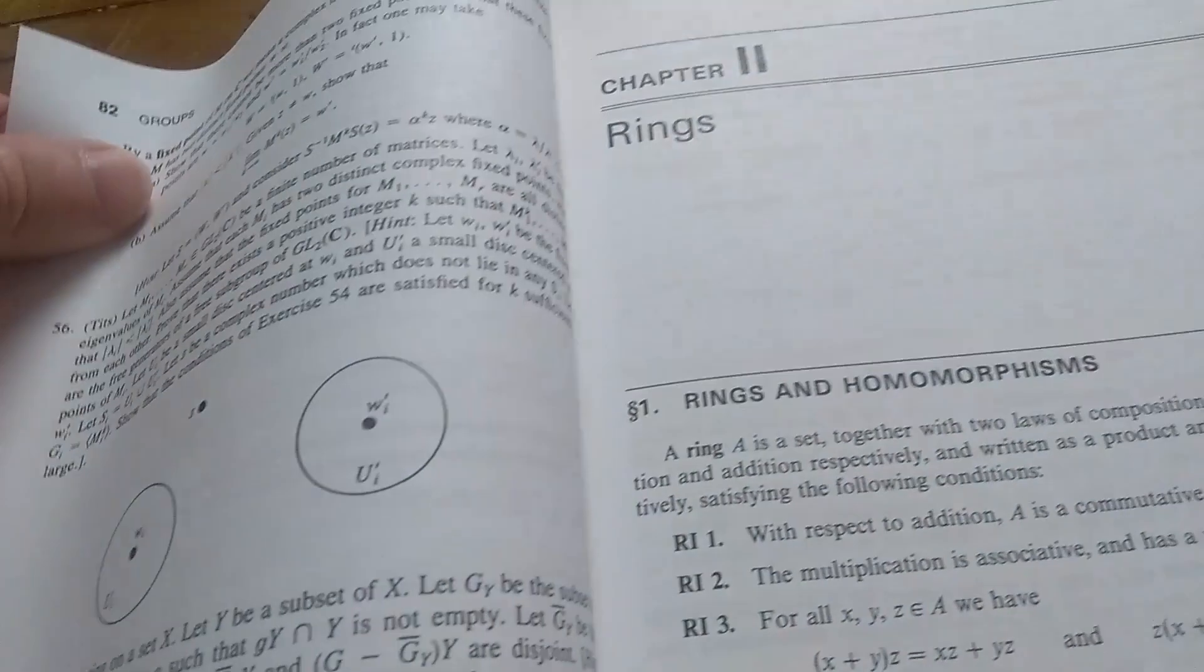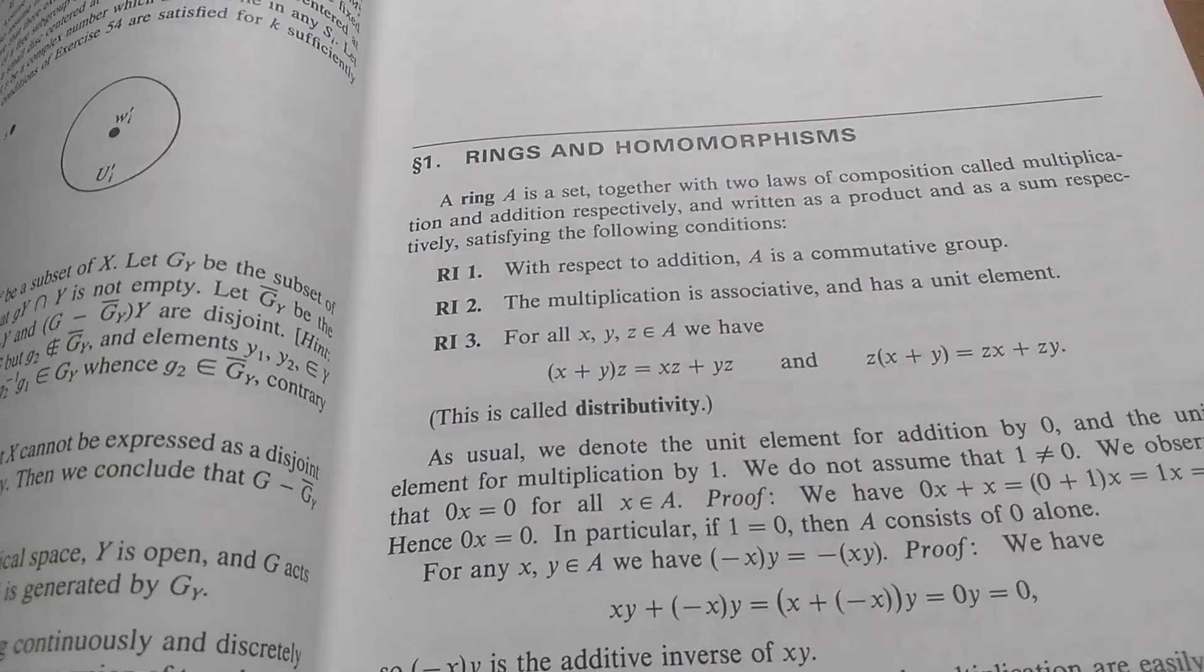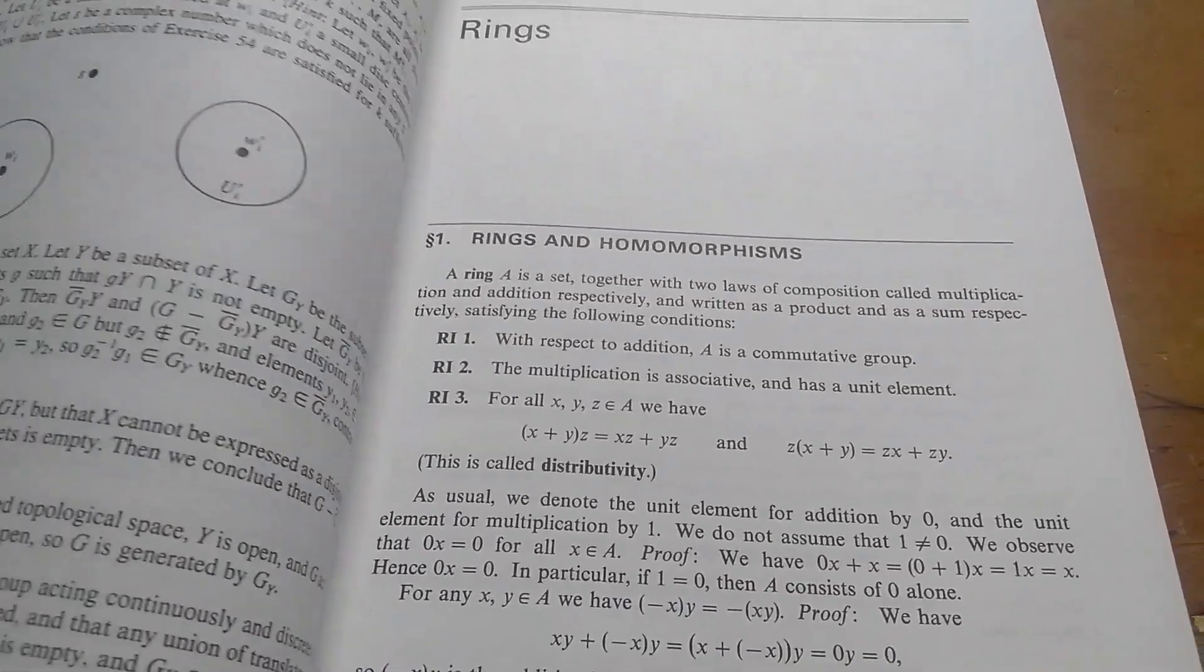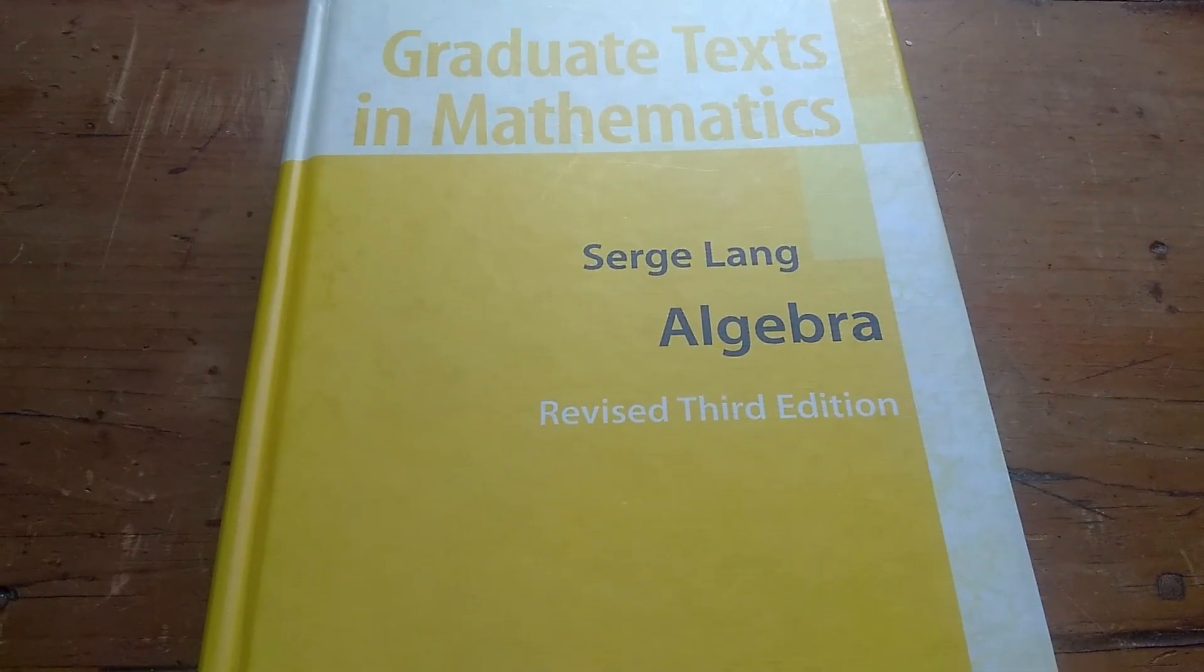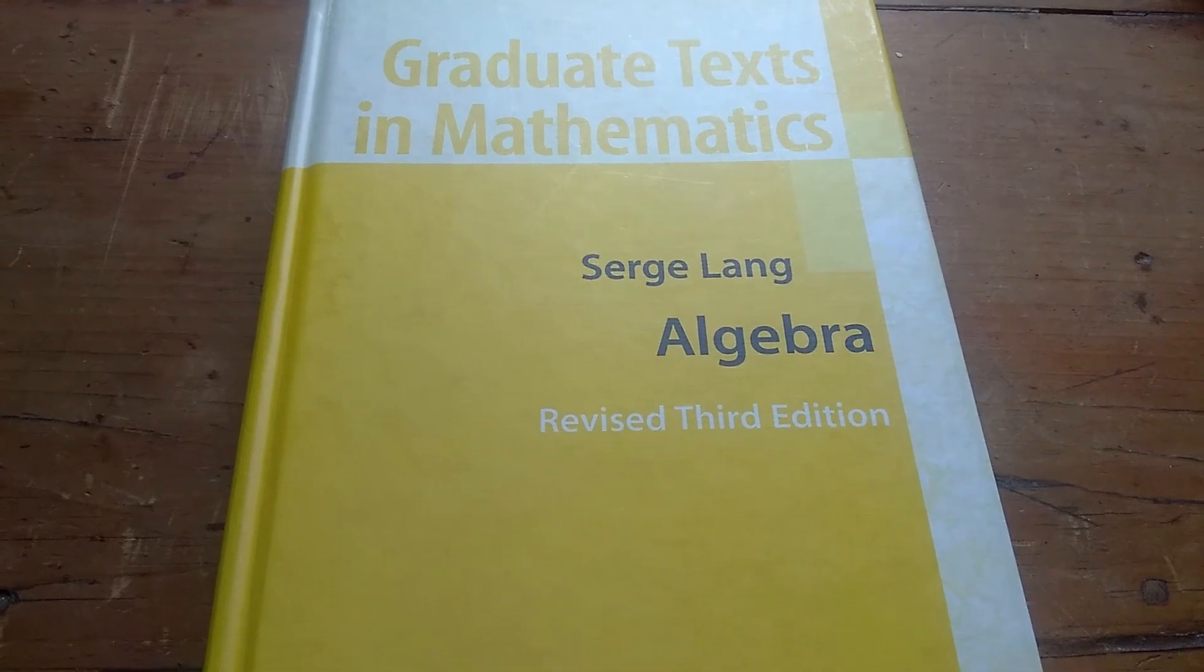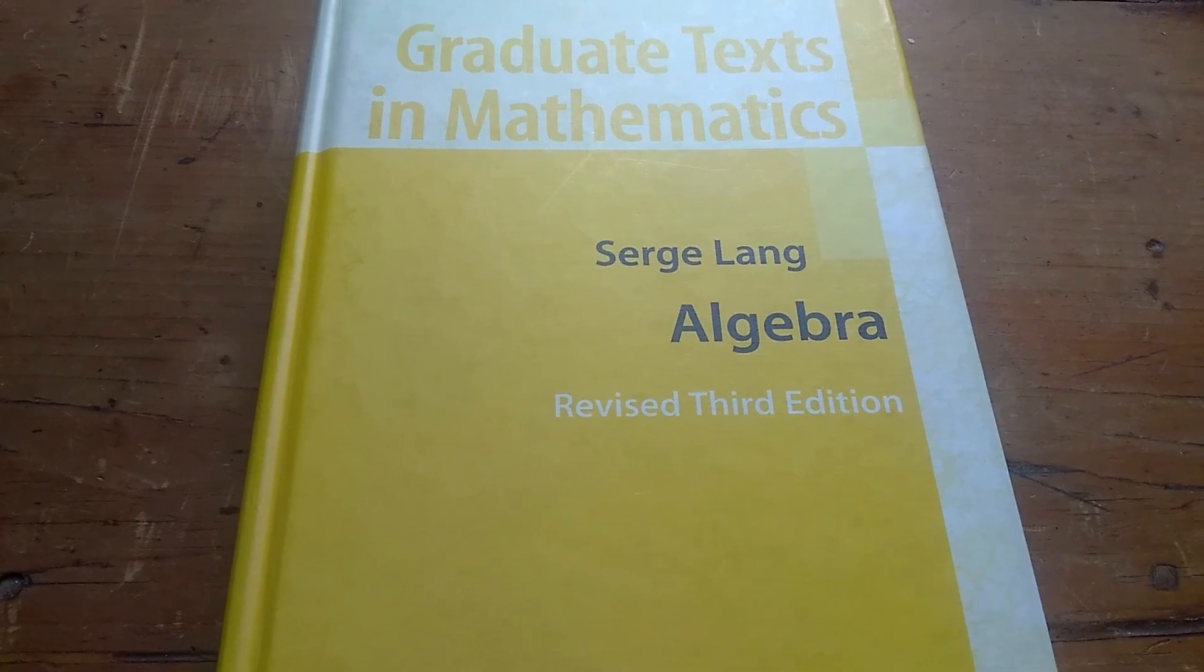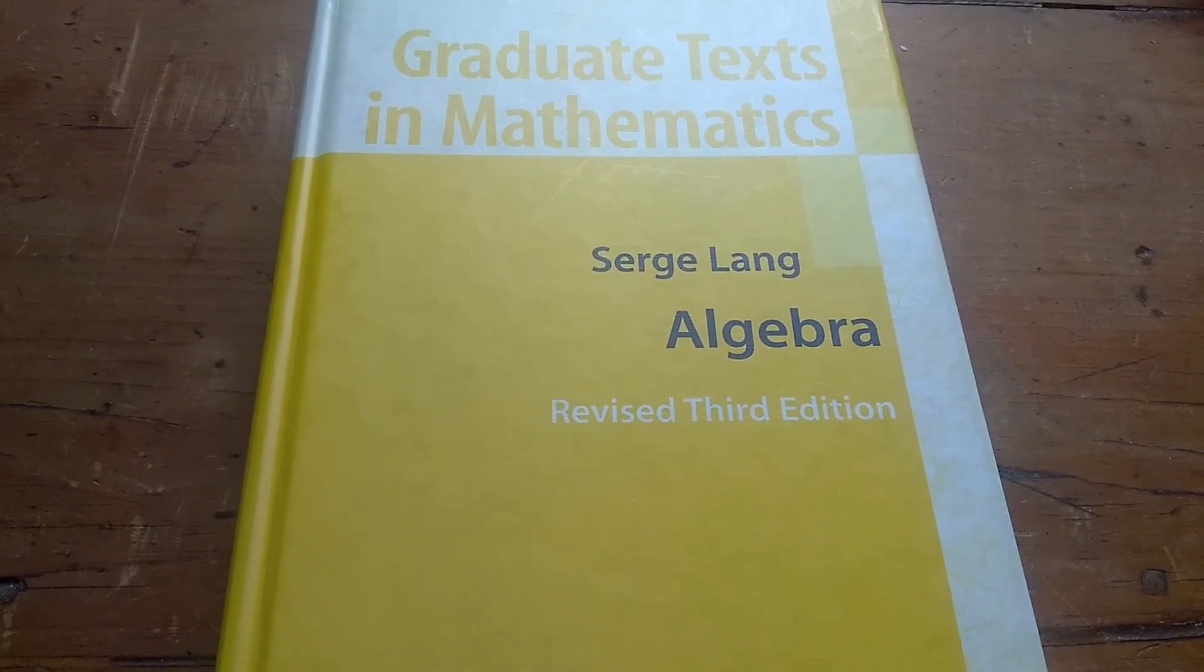So this book is extremely comprehensive. It is definitely a book worth owning if you are studying mathematics. It is the most comprehensive book in existence on abstract algebra. If you knew all of this information, you would be producing, you could produce research easily, I think, at the PhD level.